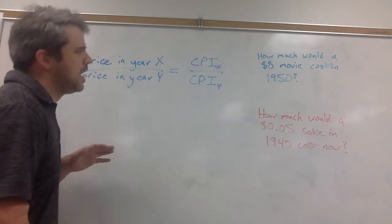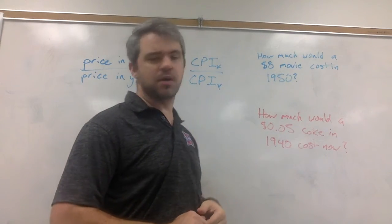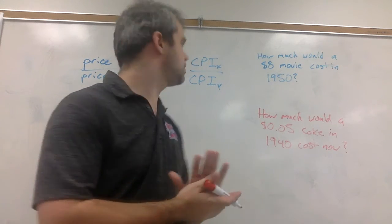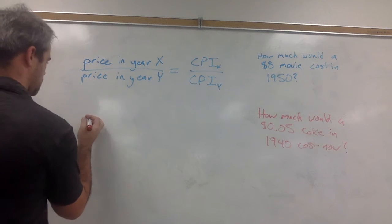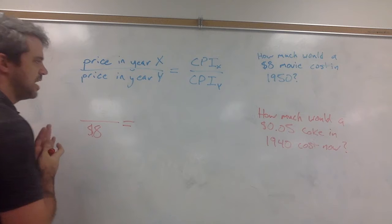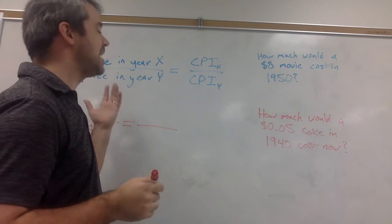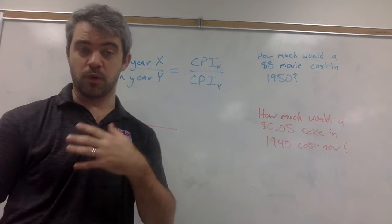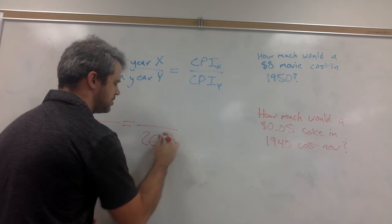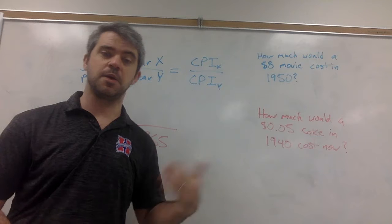Okay, so let's do an example real quick. So how much would an $8 movie cost in 1950? Well, to do this, we need to say, okay, it cost $8 now, so we need to find the CPI for now, which turns out is about 265, about two and a half times what prices were in our base year.